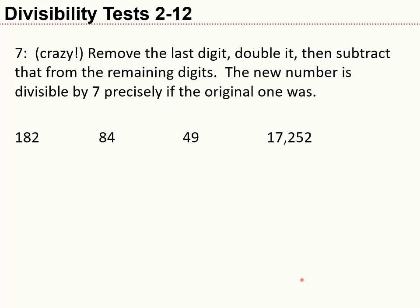The divisibility test for 7 is a crazy, wonderful trick. In words: remove the last digit, double it, then subtract that from the remaining digits. The new number is divisible by 7 precisely if the original one was. Consider 182: I take off the 2 and double it to get 4, then subtract — 18 minus 4 equals 14. Since 14 is 7 times 2, 14 is divisible by 7, and so 182 is also a multiple of 7.